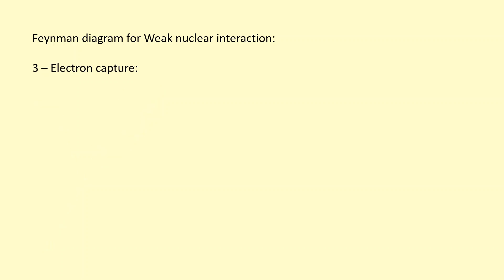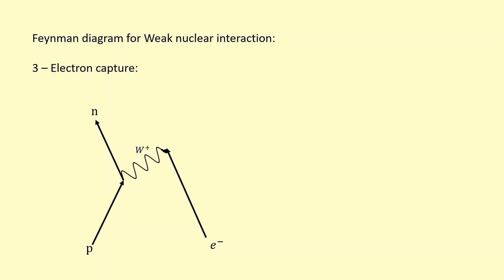Electron capture is another weak nuclear interaction. It happens when the electron orbiting an atom gets too close to the nucleus — too close to a proton — and gets captured by that proton. The proton can only turn into a neutron, and when it does, to conserve charge it emits its positiveness via the W-plus boson. That W-plus interacts with the electron, and to conserve lepton number we have a lepton at the bottom — the electron — so we need another lepton at the top: an electron neutrino.